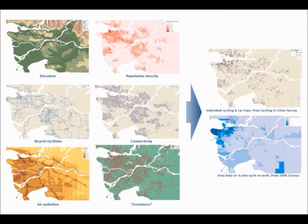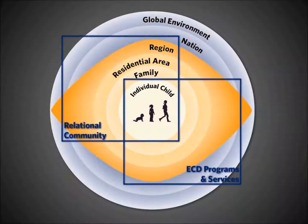What I'd like to introduce you to today is the work of a mentor of mine named Dr. Clyde Hertzman, who recently passed away. I worked with him at UBC understanding how the environments kids live in literally get under the skin through a process called epigenetics. And that model is basically saying that children are nested within a series of these scales. I'd just like to walk you through a few of those scales to exemplify this.